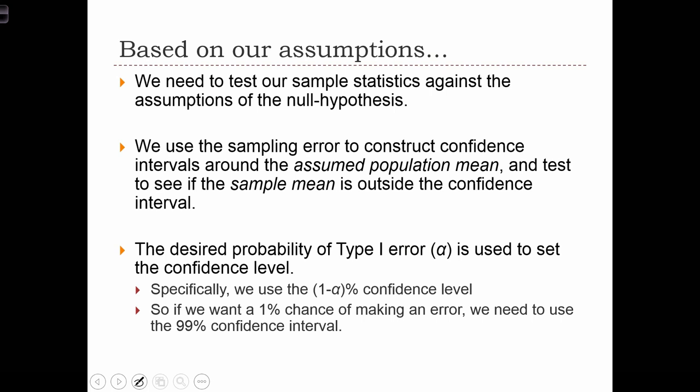So now, how do we go ahead and test our null hypotheses? We need to test our sample statistics against the assumptions of the null hypothesis. We're going to use the sampling error to construct confidence intervals around the assumed population mean. This is around the mean that's assumed in the null hypothesis. And we test to see if the sample mean that we collected is outside the confidence interval that we create around the hypothesized mean.